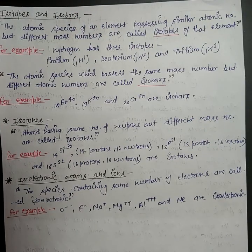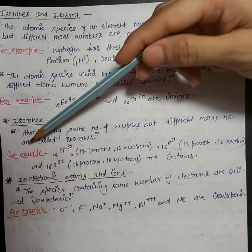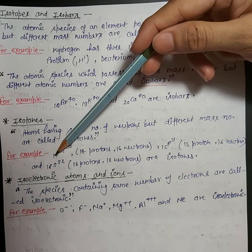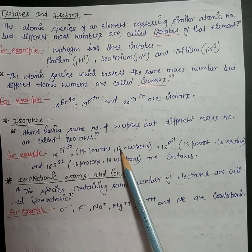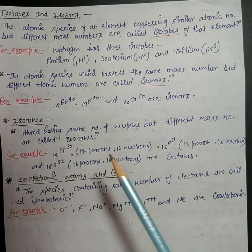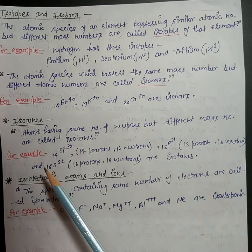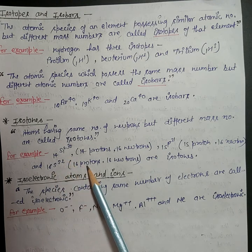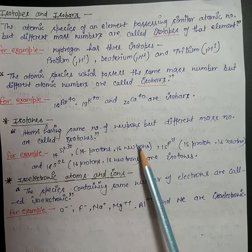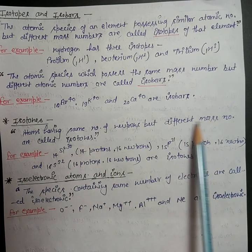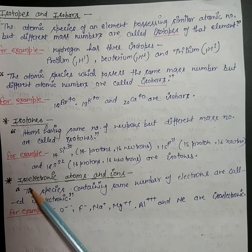Next topic is isotones: atoms having the same number of neutrons but different mass number are called isotones. For example, ¹⁴Si³⁰ has 14 protons and 16 neutrons (30 minus 14). ¹⁵P³¹ has 15 protons and 16 neutrons (31 minus 15). They all have the same number of neutrons but different mass numbers because they have different numbers of protons.